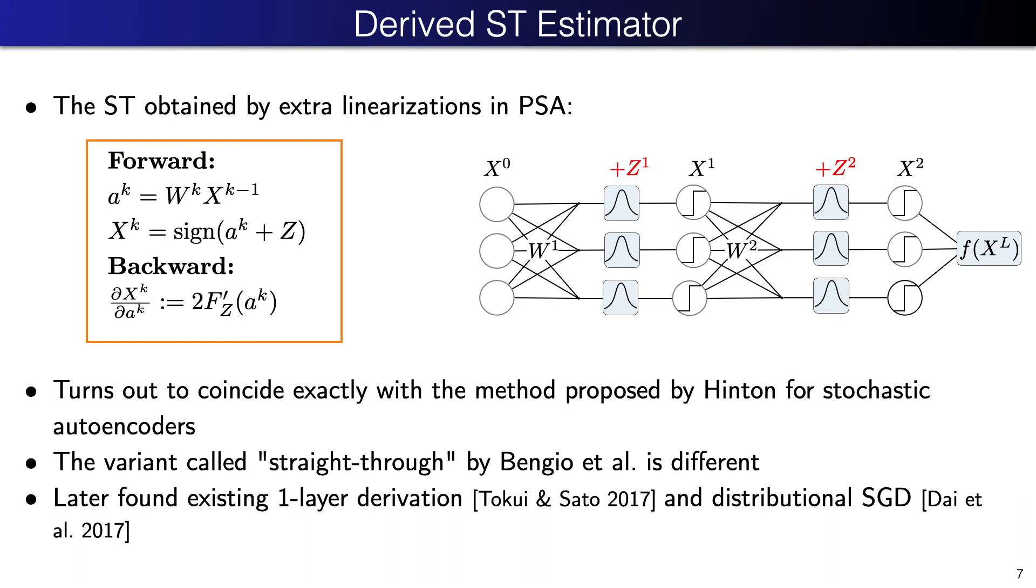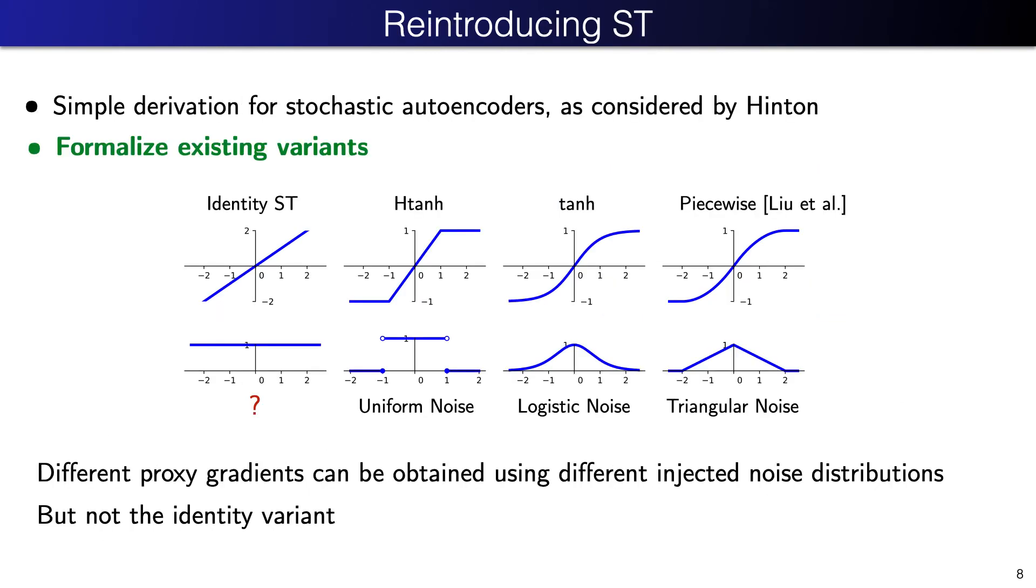In particular, Tecui and Sato obtained it as a side result in case of single-layer models. Dai et al. used distributional derivatives to obtain an equivalent distributional SGD algorithm. At this point, we can say that the straight-through already exists. It has even been theoretically justified in some side results, but the field is not aware of it because it was never properly introduced and studied. This is the main motivation behind this work.